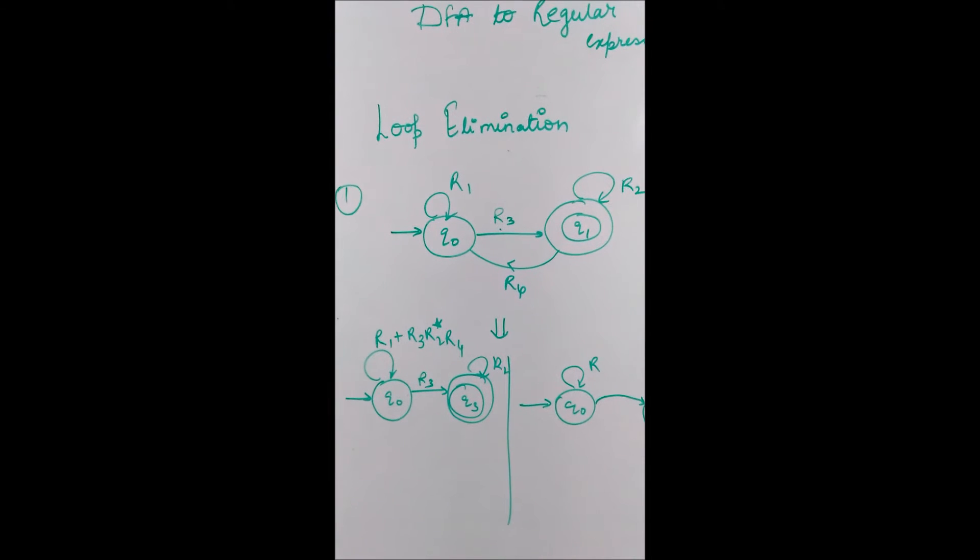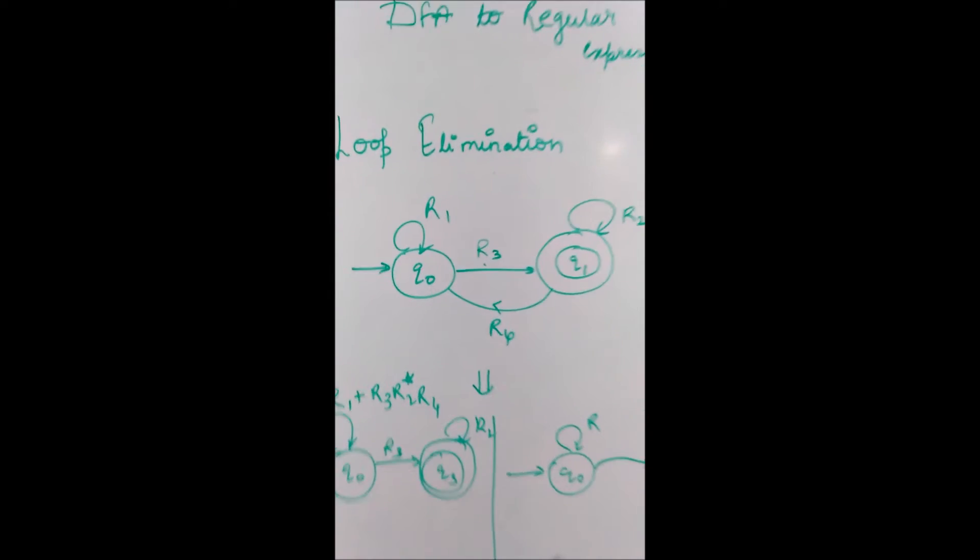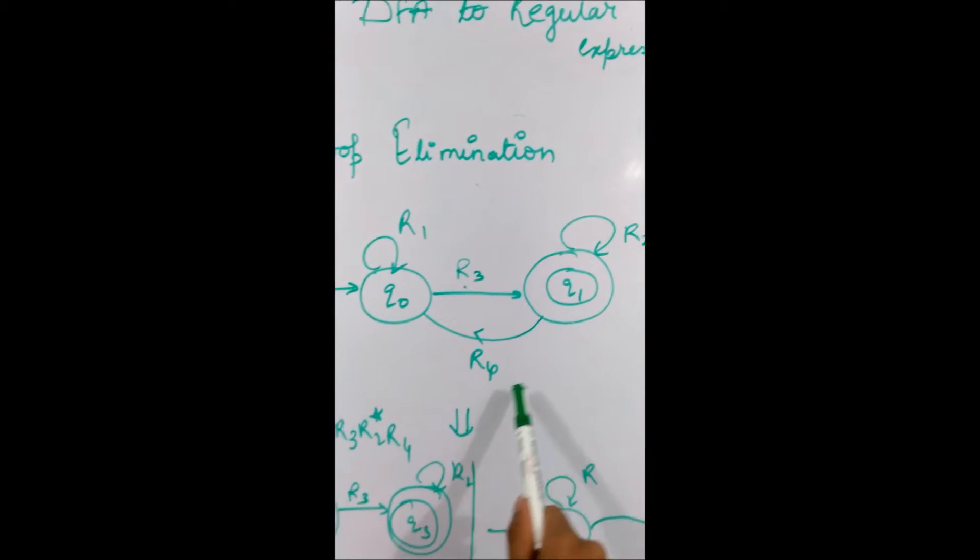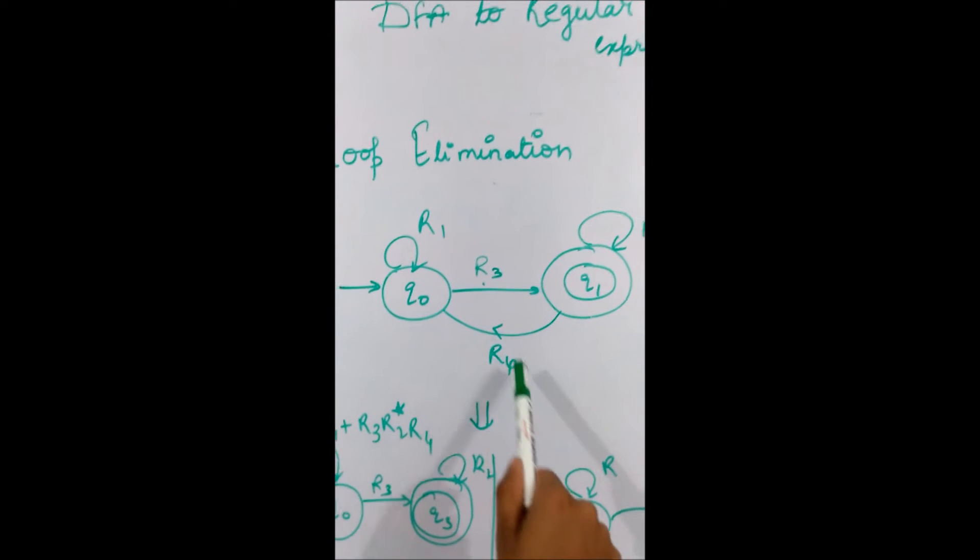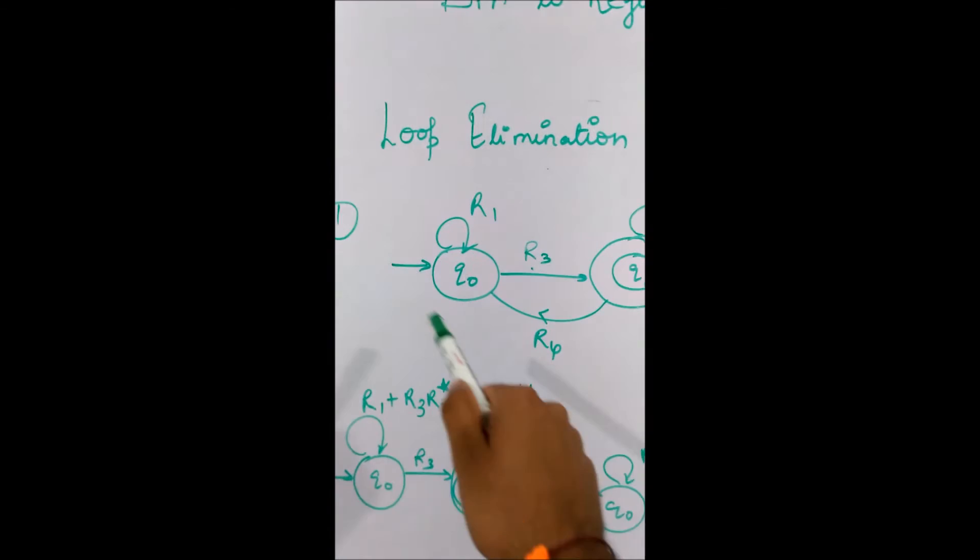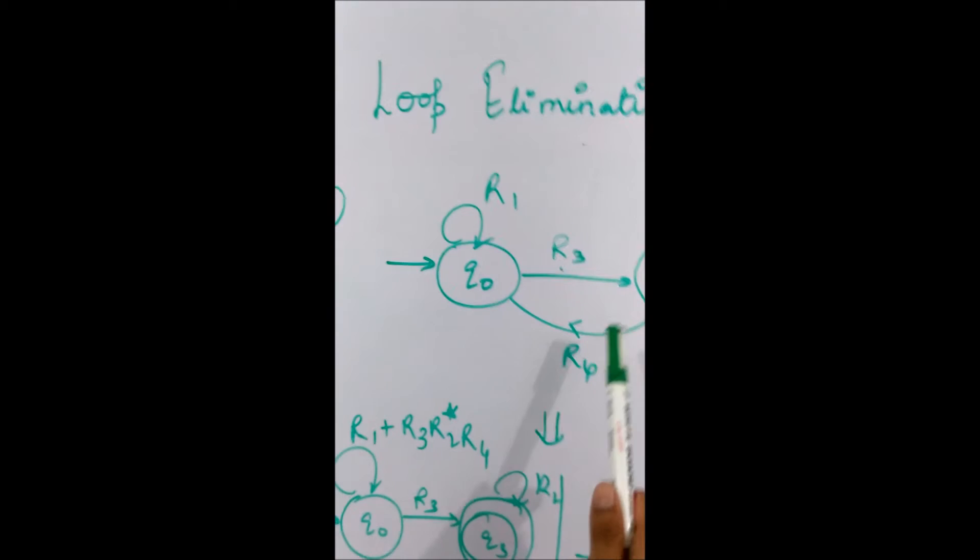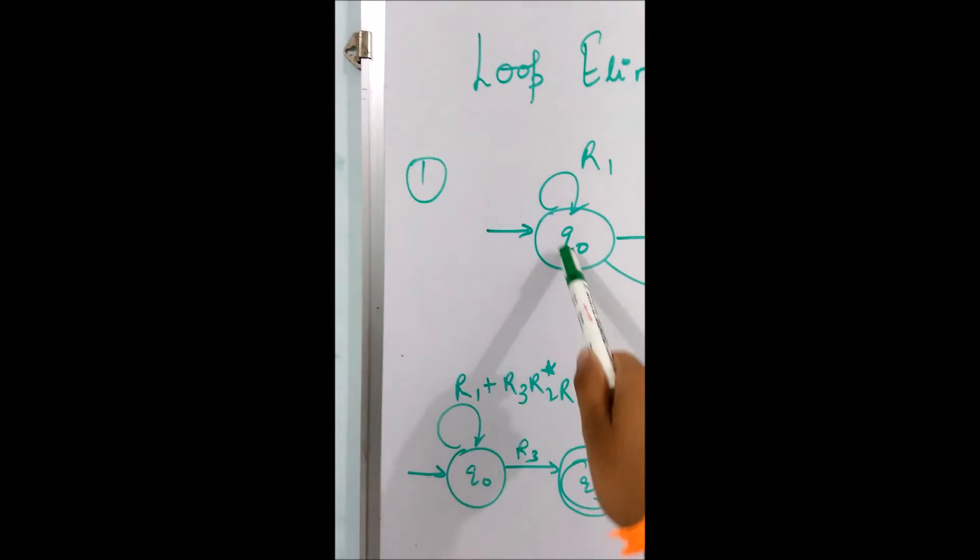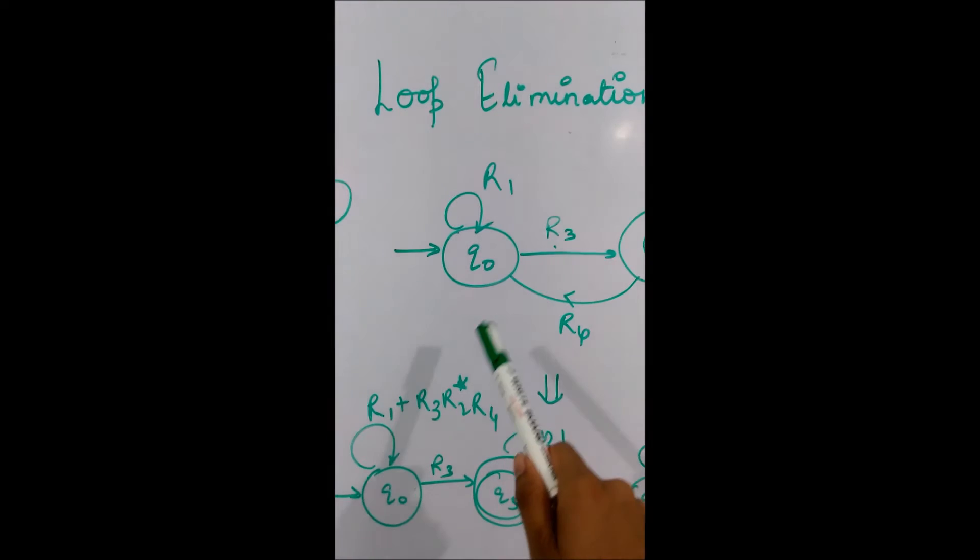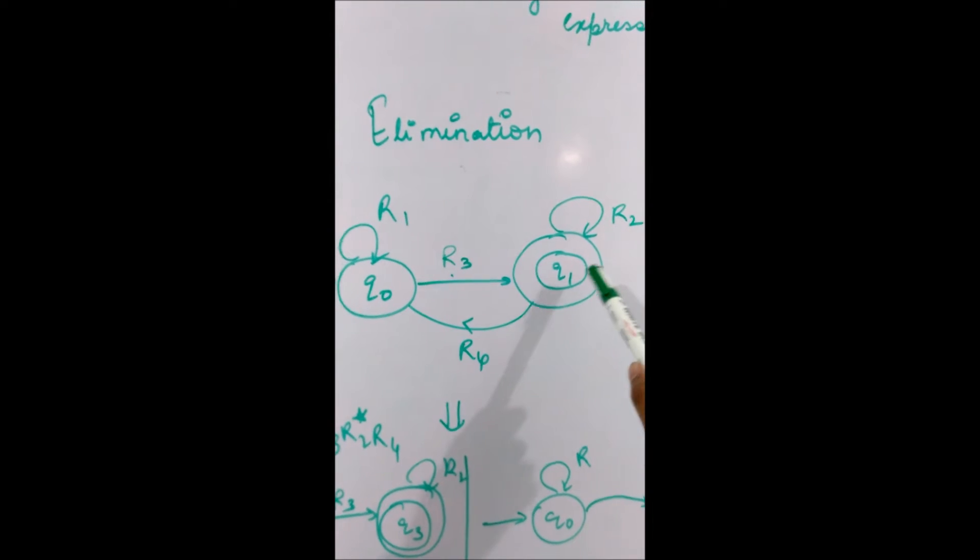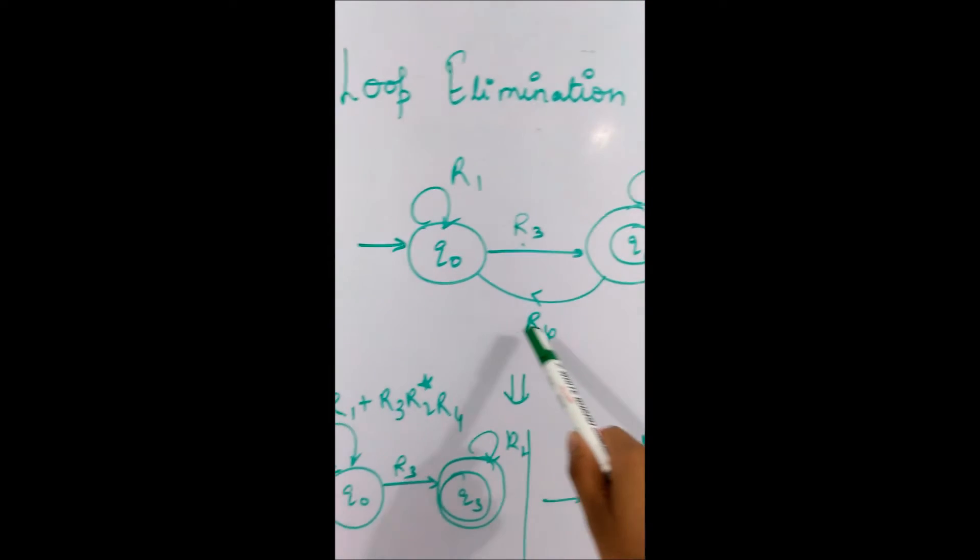Consider the q0 state. We have a loop which is r3 which is going here and again it is coming back to q0 on r4. We can transfer this effect on q0 state. Which will be r1 which is already there, which is this loop. And then there is another loop which is r3, then r2, r2 which is making a self loop on q1 and then again it is coming back to r4.